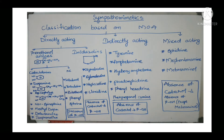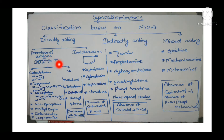The first classification is based on mechanism of action. These are of three types: directly acting, indirectly acting, and mixed acting. Directly acting drugs are again divided into phenethanolamines and imidazolines based on structure. Phenethanolamines contain a benzene ring, an ethanol group (CH₂CHOH), and an amine (NH₂).